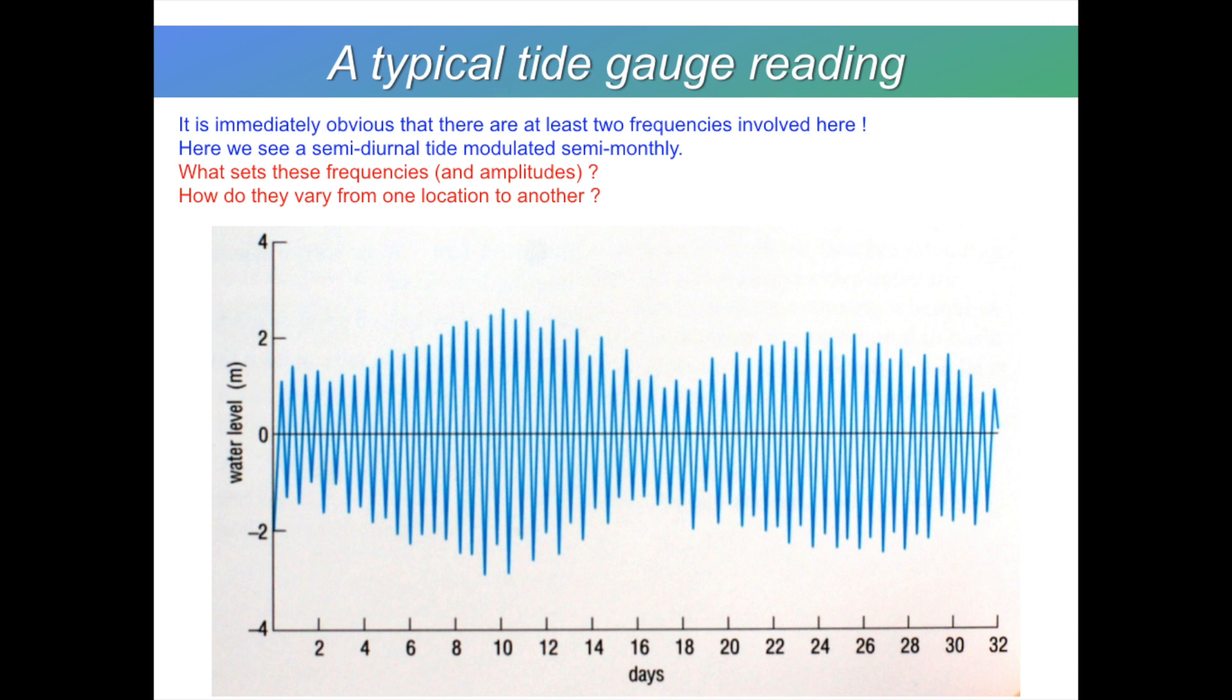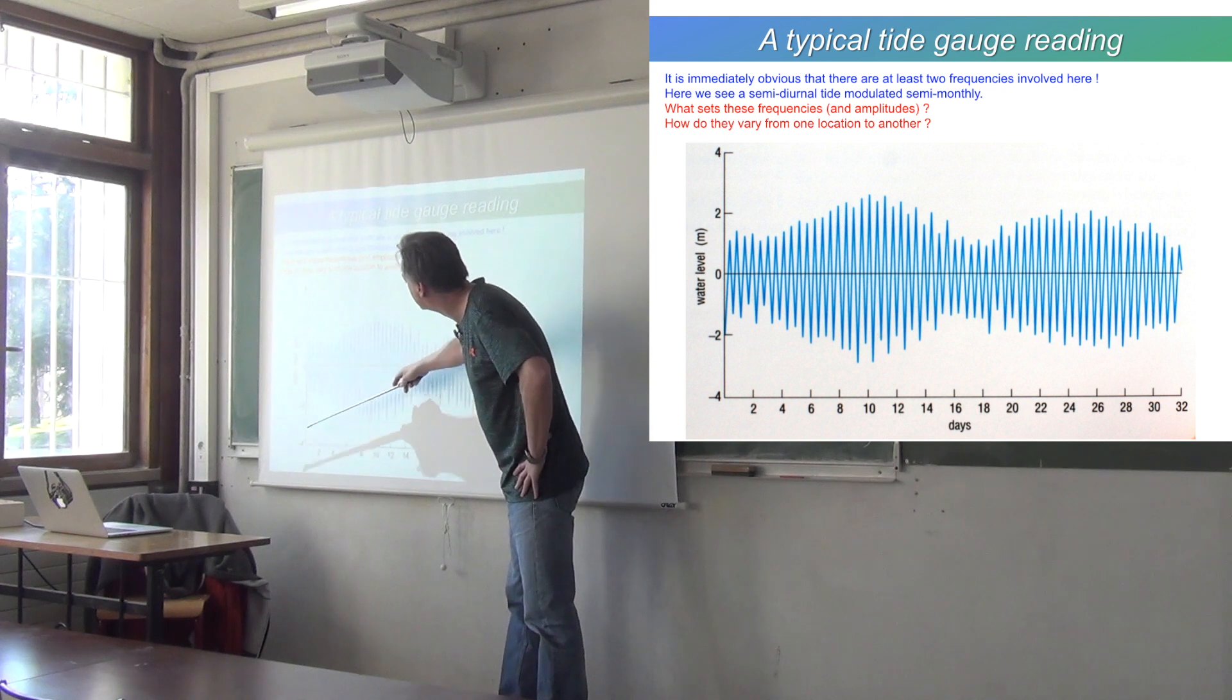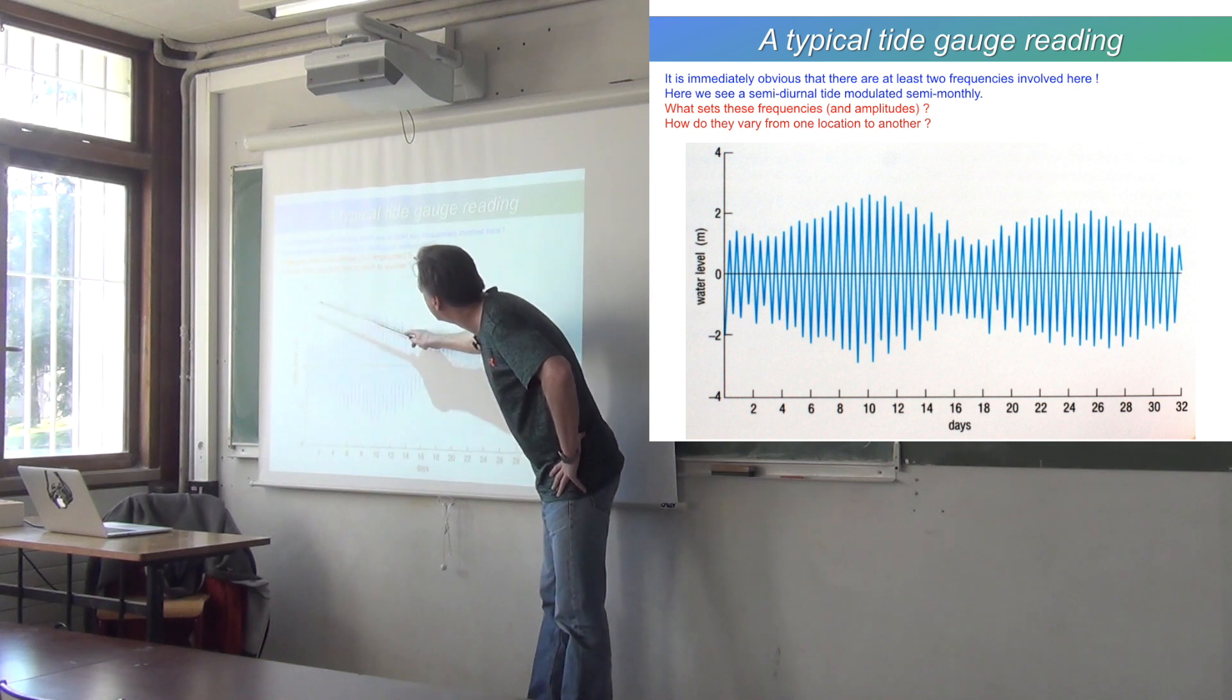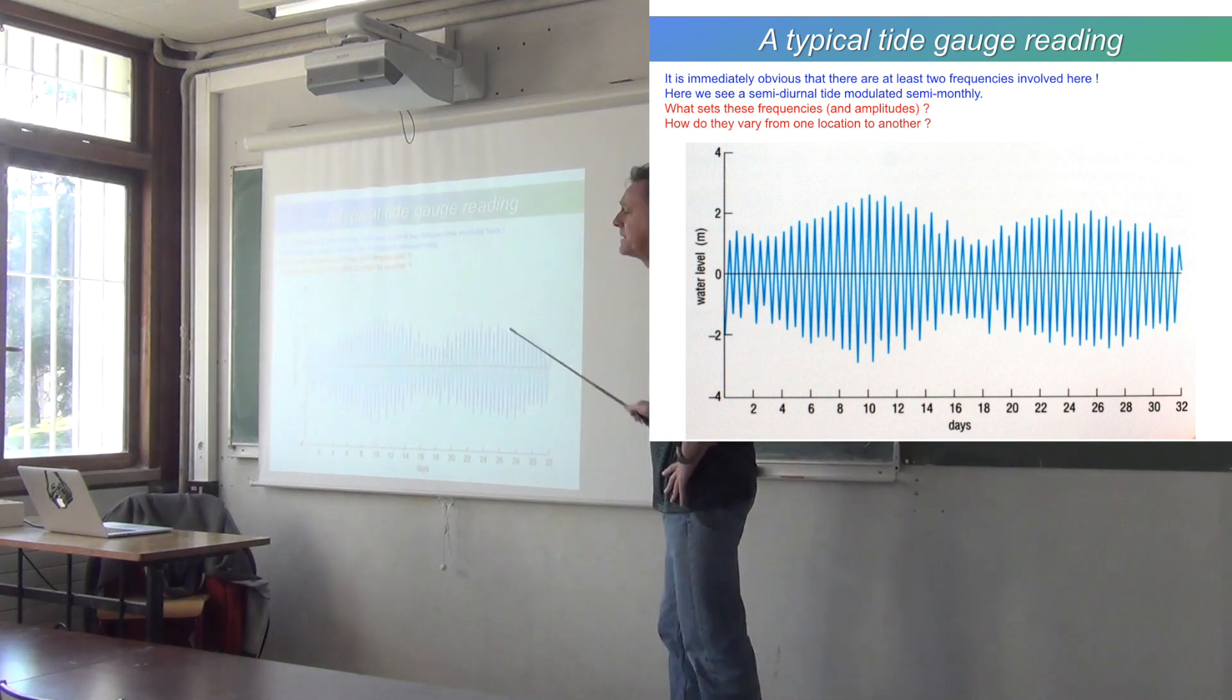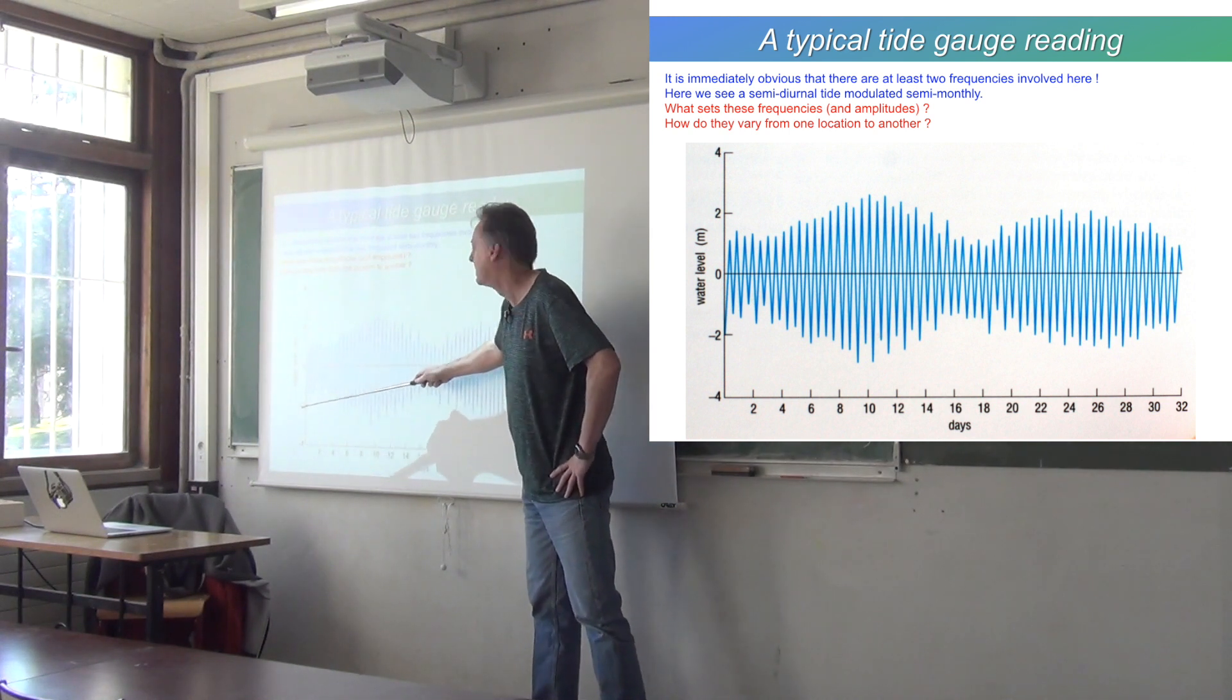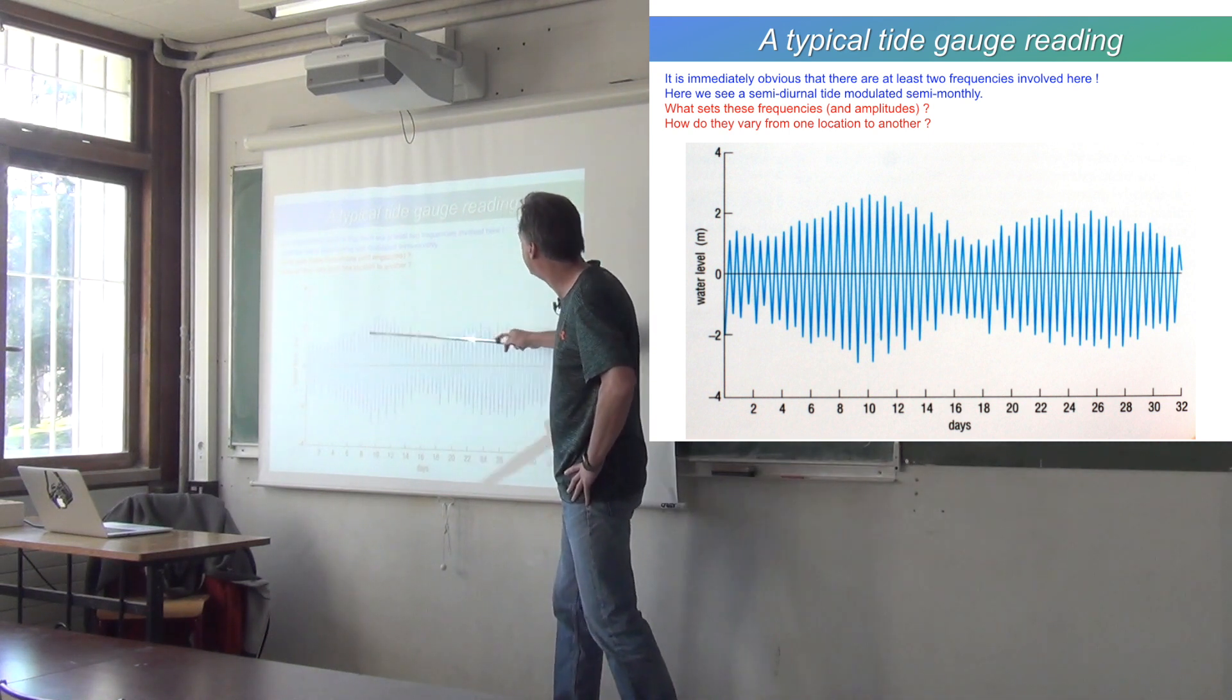So here is a time series of sea level, measured at some coastal station somewhere in England. And so what do you see when you look at that time series? Well, the first thing you notice is that it varies quite quickly. So these are the days. This is about a month along the bottom. So within a day, it's gone up and down twice, basically. And so we have two highs and two lows every day. We have a semidiurnal tide. The second thing you notice is that the amplitude of this semidiurnal tide varies throughout the month. So you have some periods in the month where it's quite high amplitude and some periods where the amplitude is lower.